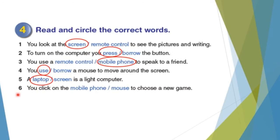The last sentence for today. You click on the mobile phone or mouse to choose a new game. Here I have click on. We said click on with what? Mobile phone or mouse? Mouse. Be careful girls. If I say press button, click on mouse, light computer, laptop.